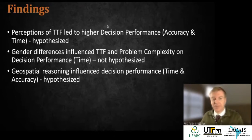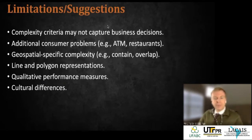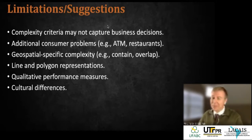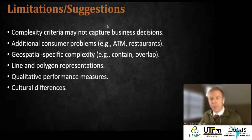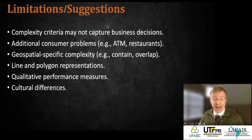Key findings: when decision makers perceived good task technology fit, accuracy and time both improved — decision making performance improved. We also found unexpectedly that gender had an impact, influencing both fit perceptions and, along with problem complexity, decision performance in terms of time. Geospatial reasoning ability influenced decision performance — both time and accuracy. So fit and ability were important, with gender differences and problem complexity as additional significant factors.